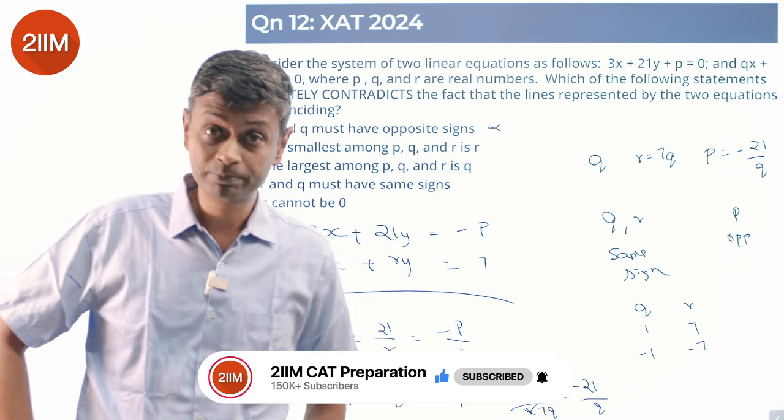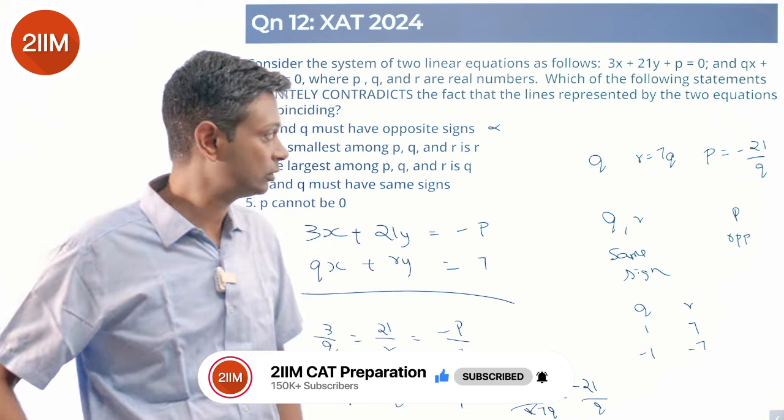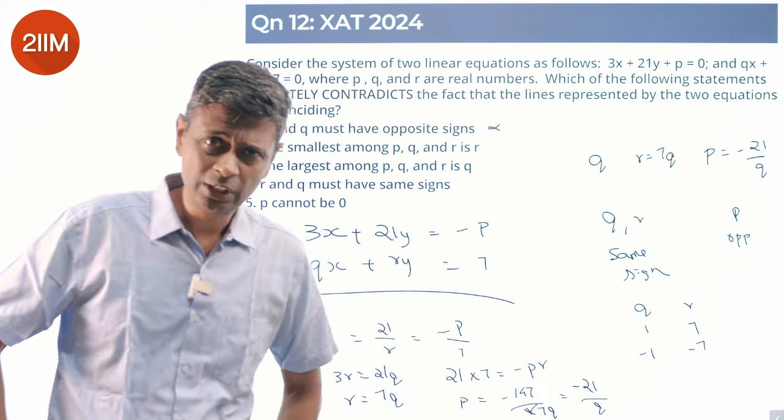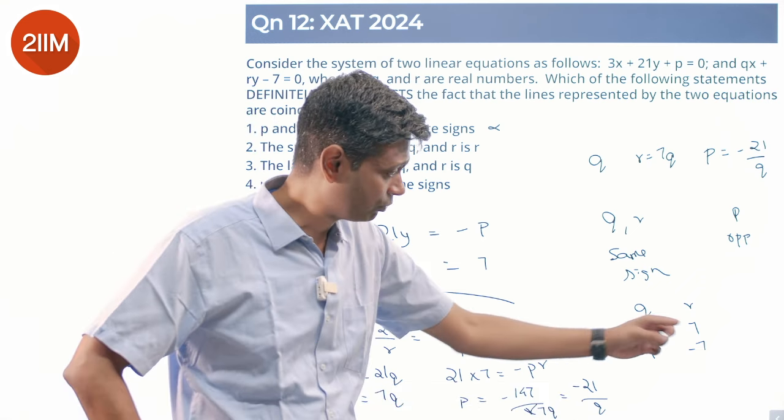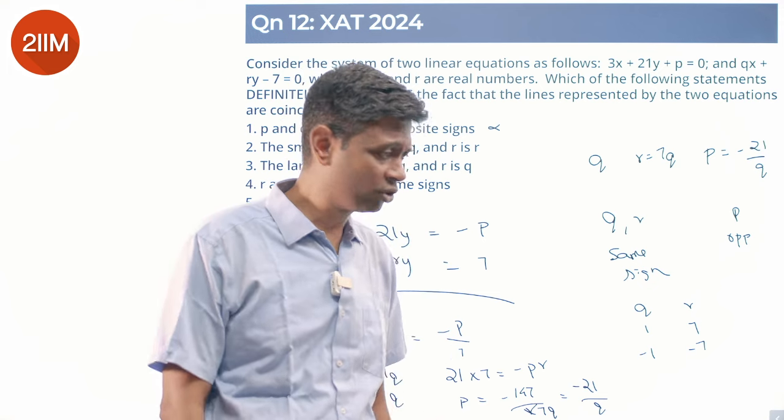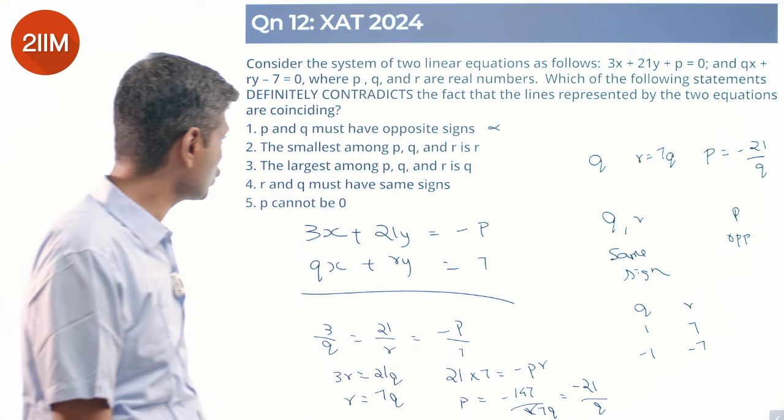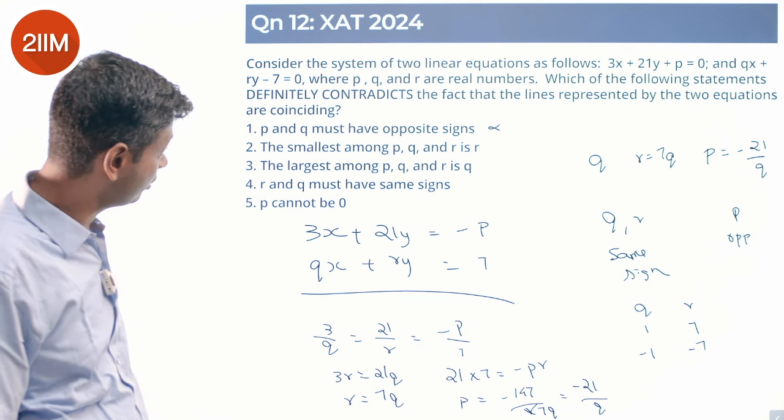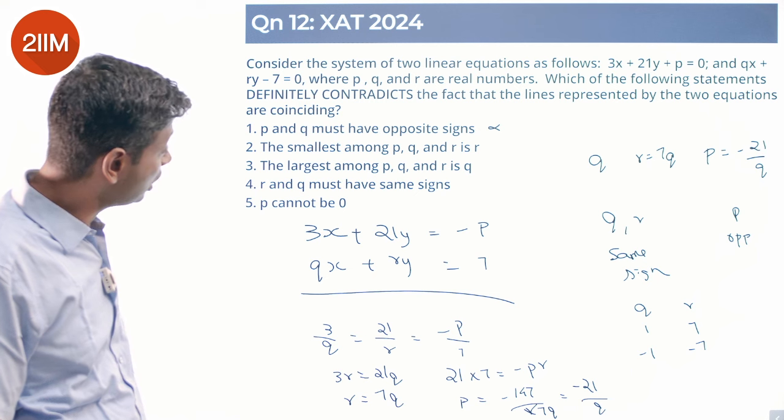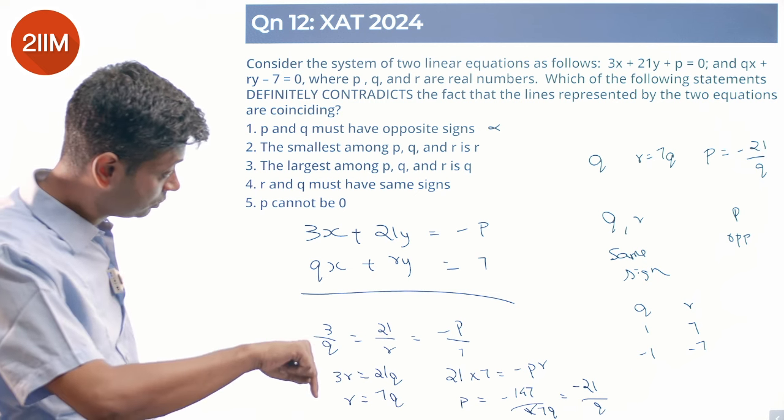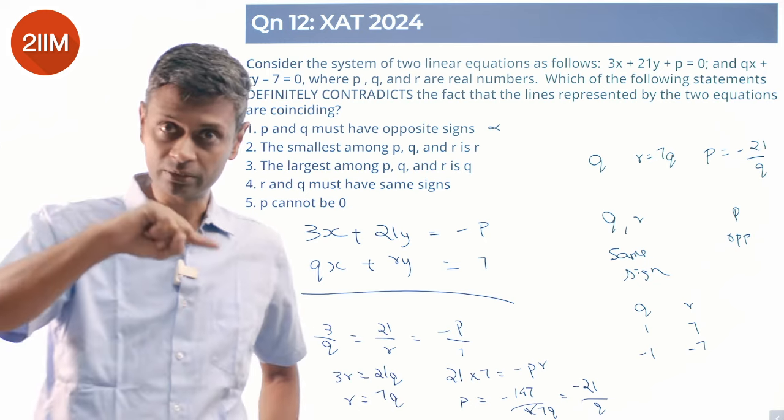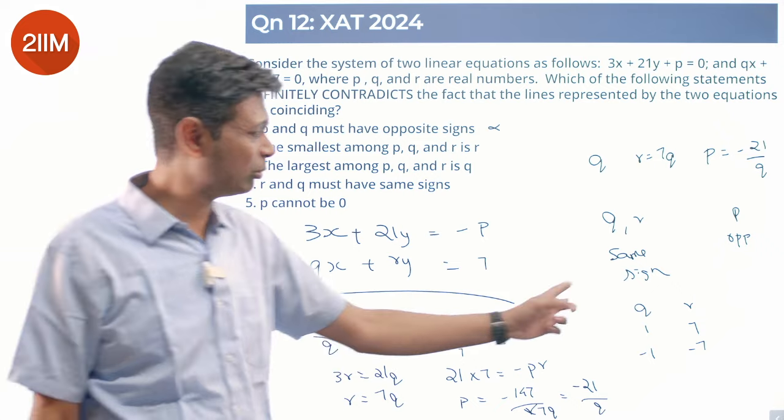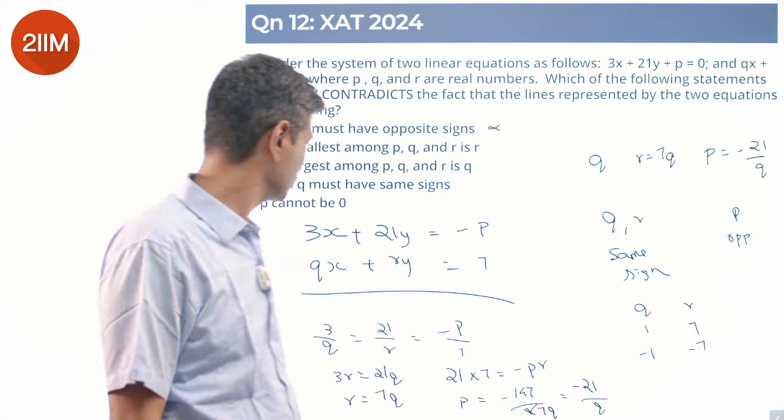So the smallest among these three should be r - not required. The largest among p, q, and r is q. Q and r have opposite signs. Largest among this is q - is that contradicted? Could the largest among them be q and still this condition be satisfied? I think that should be possible because we are able to flip this, so it should be possible.